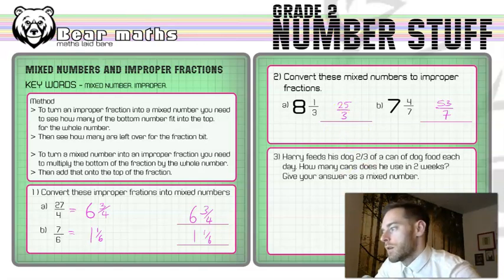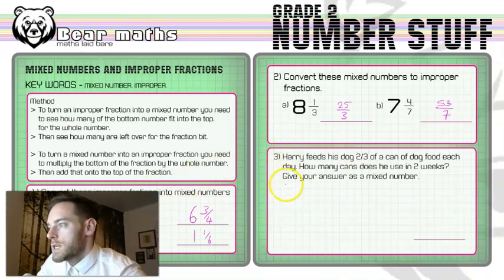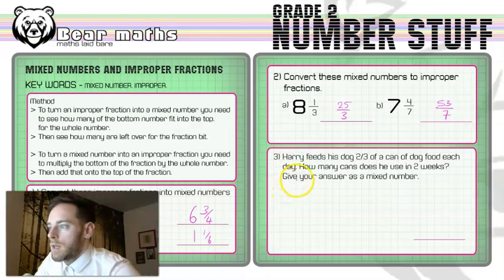Now I'm just going to move myself over here. We're going to have a look at this kind of more wordy question, slightly more difficult question because we have to figure out what it is that we need to do in order to get the answer to the question. This one is about Harry and Harry feeds his dog two thirds of a can of dog food each day. We've got to work out how many cans does he use in two weeks?